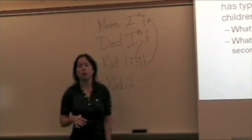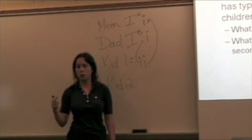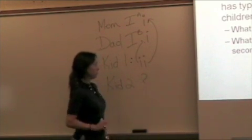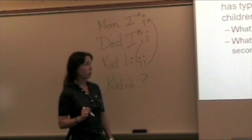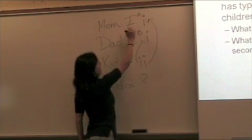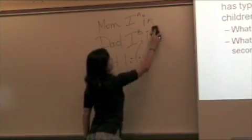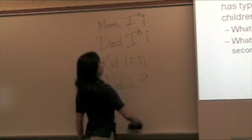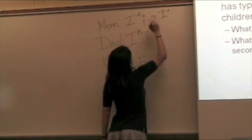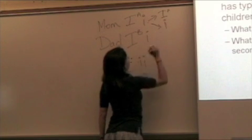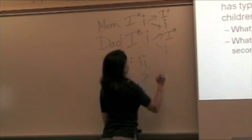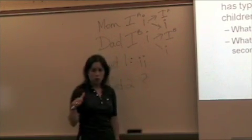We've answered the first part of the question. We've figured out what the genotypes of the parents are. The next step is we need to figure out what's the possible genotypes for the second child, and we can do that with a Punnett square. So the mom could give a gamete of I^A or a gamete of little i. The dad could give a gamete of I^B or little i. We're going to put those on a Punnett square.